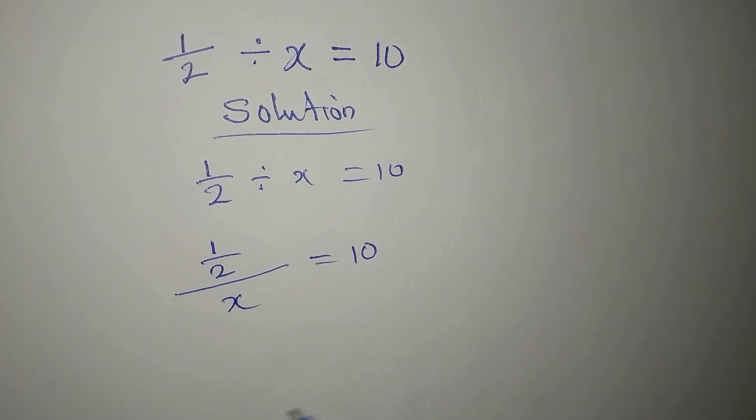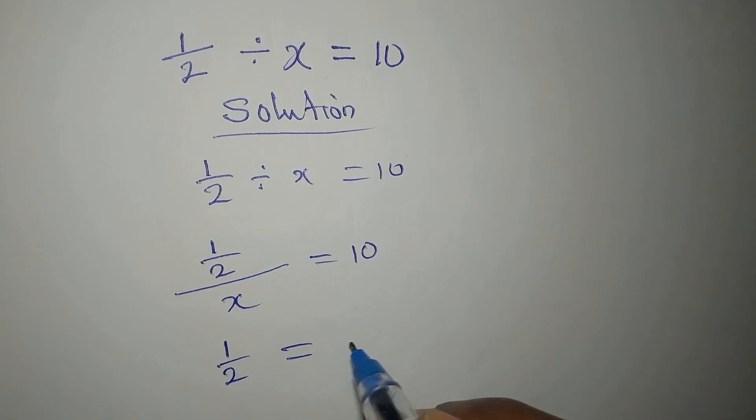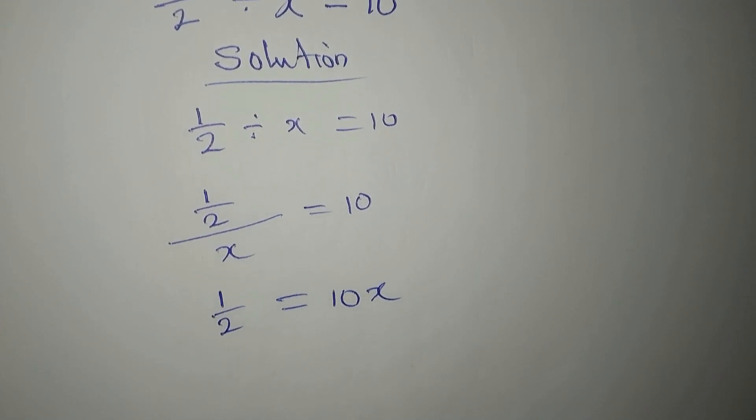And at this point, we can always cross multiply. So we have one over two equals ten x. Okay, yes, this is how it is.